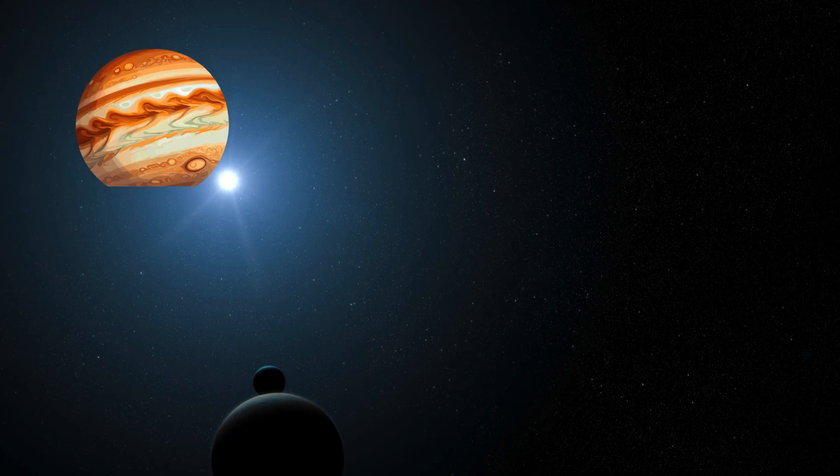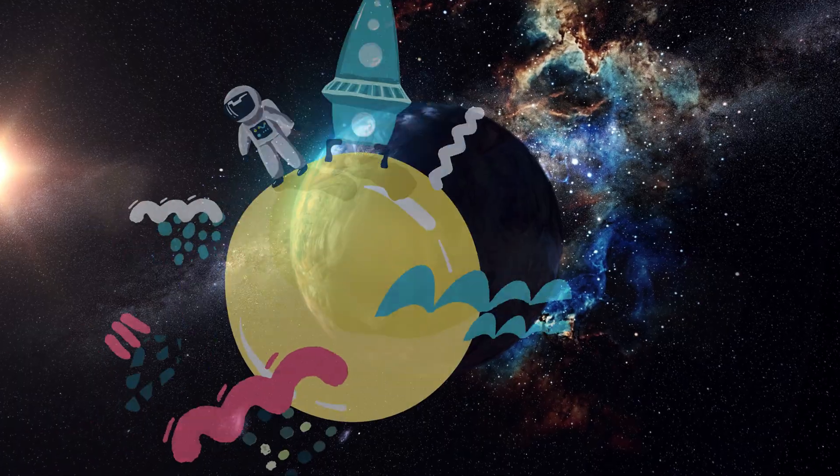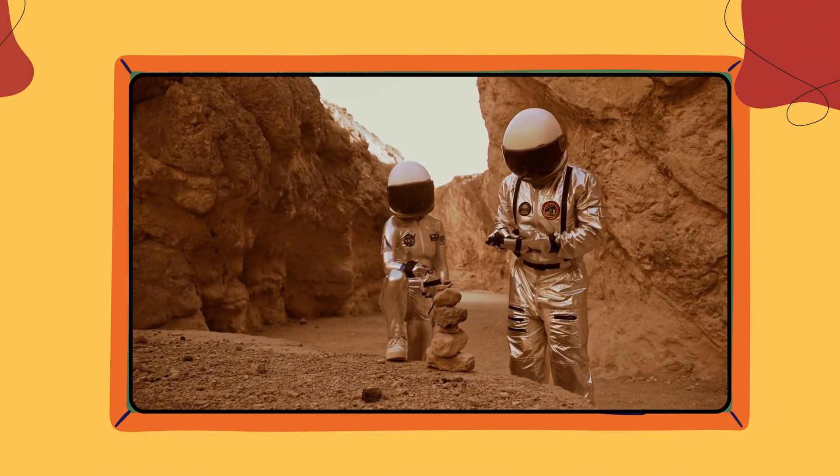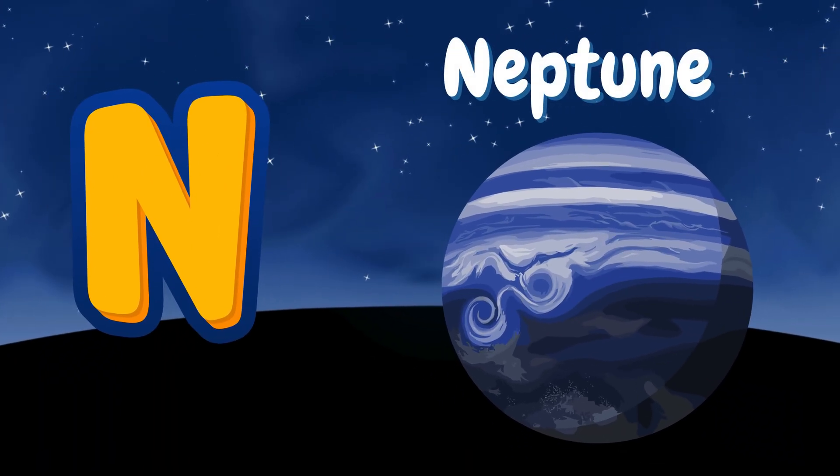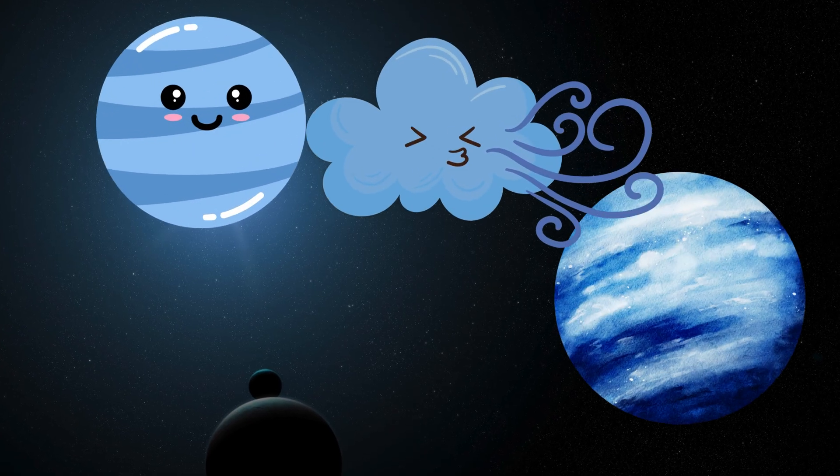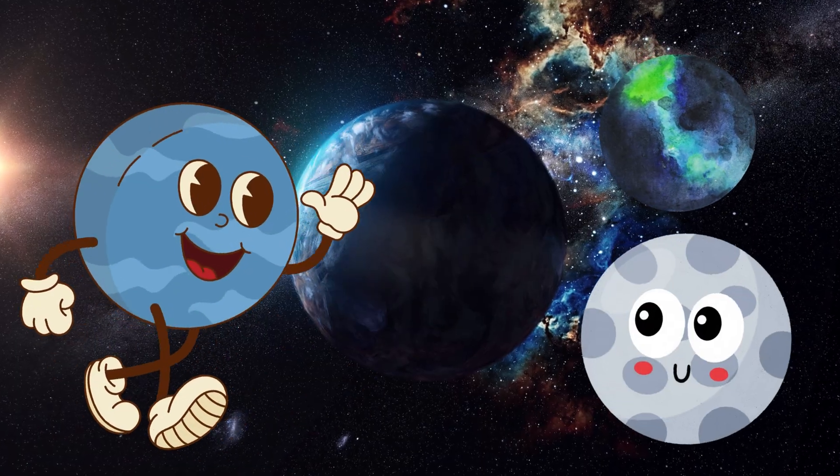M is for Mars. Mars is the red planet that might once have had water. N is for Neptune. Neptune is a windy blue giant spinning super fast.